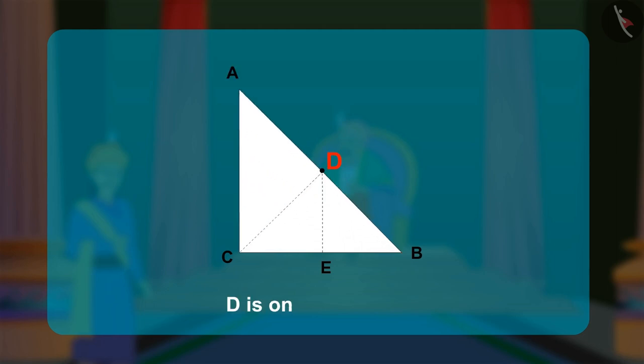D is on the bisector. Therefore, C and B are both equidistant from D. Therefore, AD is equal to BD is equal to CD.